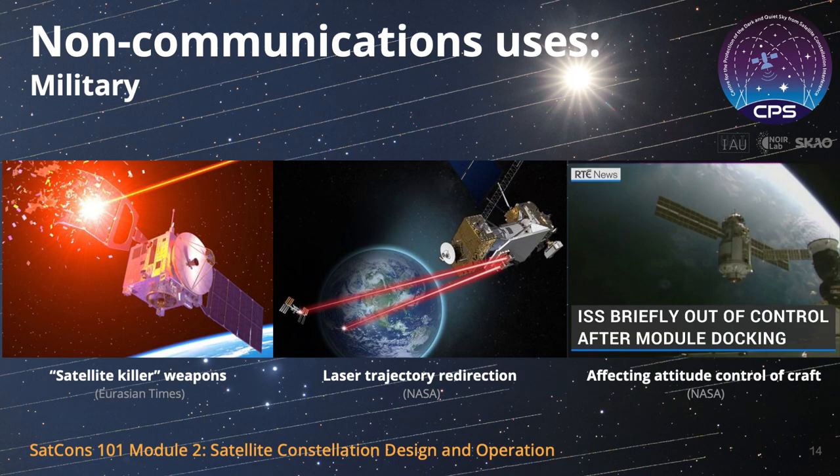Military priorities in space have existed since the dawn of the satellite era. Defense ministries may deploy so-called satellite killer spacecraft in order to conduct anti-satellite, or ASAT, operations in space. They may use high-powered lasers to nudge civilian or military satellites into or out of harm's way, and cyber warfare may prevent satellite operators from being able to maneuver their spacecraft.